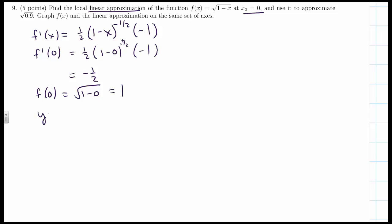So our tangent line ends up being 1 minus one-half times (x - 0), or 1 minus one-half x. That's our tangent line approximation.